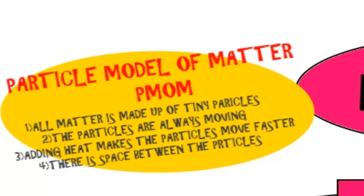Now the four points of the particle model of matter are: all matter is made up of tiny particles, the particles are always moving, adding heat makes the particles move faster, and there is space between the particles.